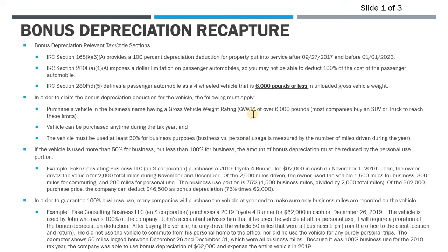If you have vehicles more than 50% used for business but less than 100%, you prorate the depreciation amount. For example, S-Corp bought a 4Runner in 2019. The owner John drove it 2,000 miles during those two months ending December 31, 2019 — 1,500 were business miles, 300 for commuting, 200 for personal use. The business portion is 75% — 1,500 divided by 2,000 total miles. So of the $62,000 vehicle, the bonus depreciation is limited to $46,500 because the other 25% is personal. Personal use of business assets is not deductible.